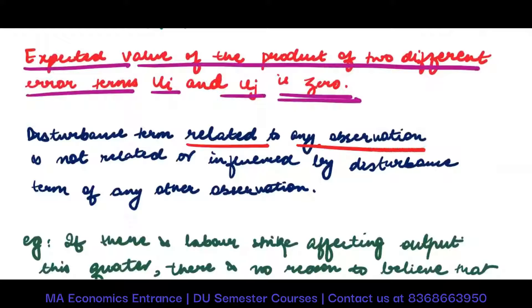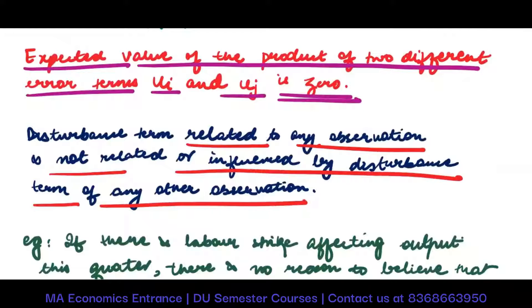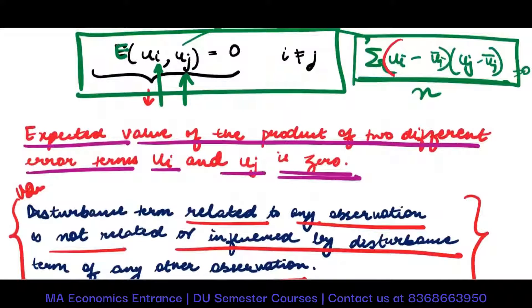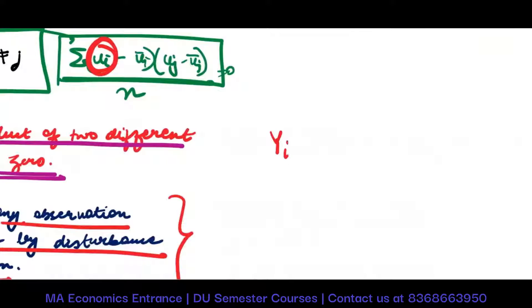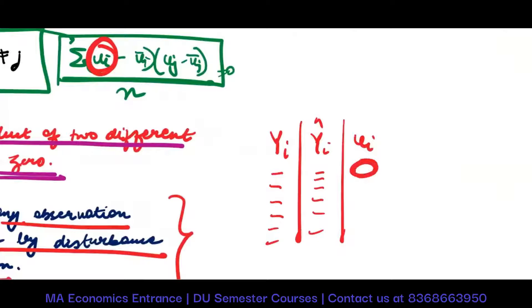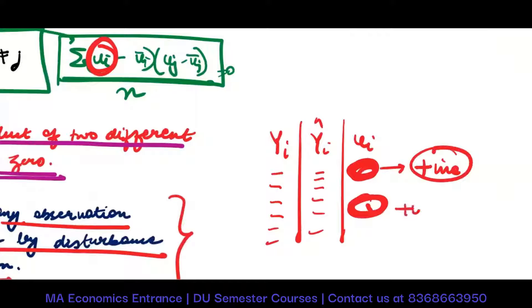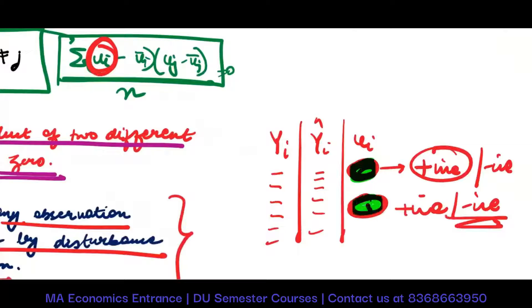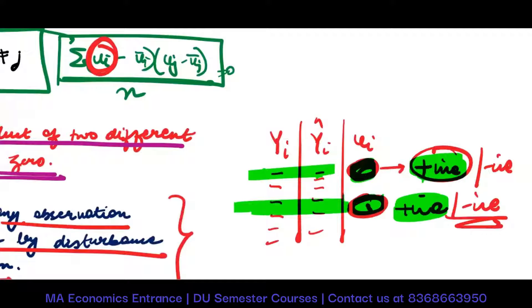The disturbance term related to any observation is not related to or influenced by the disturbance term of any other observation — that is called no autocorrelation. We are saying that if I have my Yis and give predictions about them, the error I got in the first period is in no way related to the error in the second period. It is not the case that if I got a positive error first, the second will also be positive.